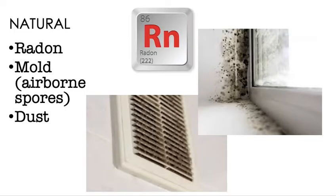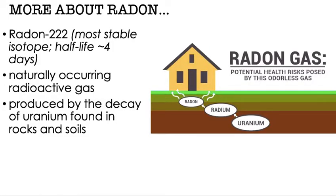One of the big ones to talk about is radon. Radon is actually a naturally occurring gas — here in the Pacific Northwest, we don't experience this too much. Another naturally occurring air pollutant is mold; it can either be airborne spores or you can actually physically see it. And then there's dust. All of those are naturally occurring — these aren't anthropogenic causes, they aren't things that humans necessarily add.